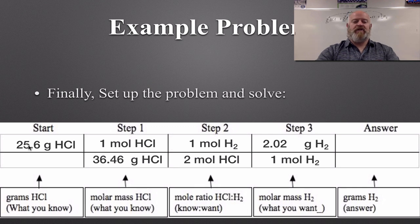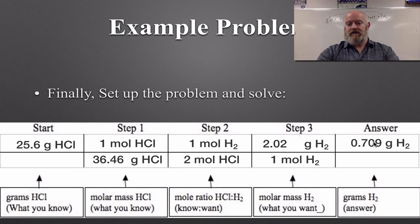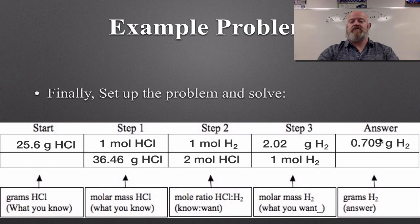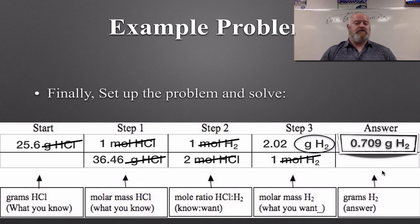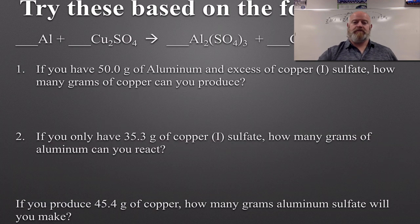Doing the math: 25.6 divided by 36.46, divided by 2, multiplied by 2.02 gives us 0.709. Your calculator will give you a longer number — you need to round it. Looking at our measurement, 25.6 has three significant figures. All the other numbers are conversion factors, so they don't affect precision. Three significant figures means our answer is 0.709 grams. Checking that labels cancel out confirms the answer is in grams of hydrogen.